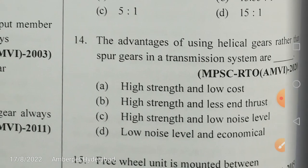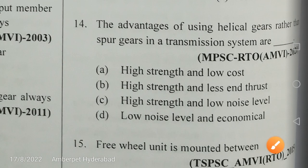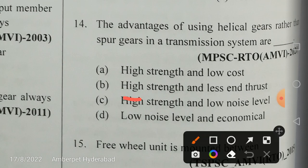The advantage of helical gears over spur gears in a transmission system includes noise reduction, transfer of power between non-parallel shafts, and high strength output. The best answer is high strength and low noise level. This question appeared in the MPSC RTO examination, which is why it was repeated.